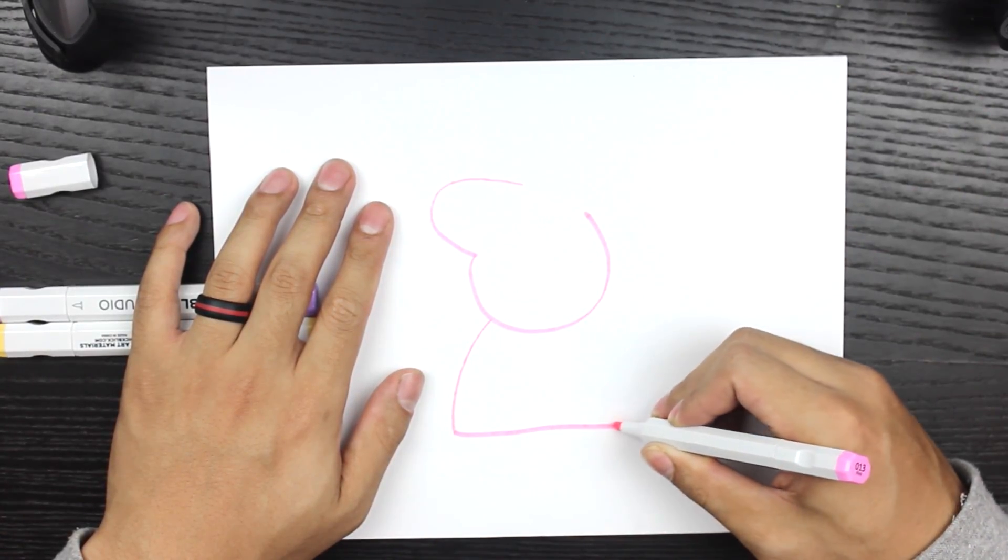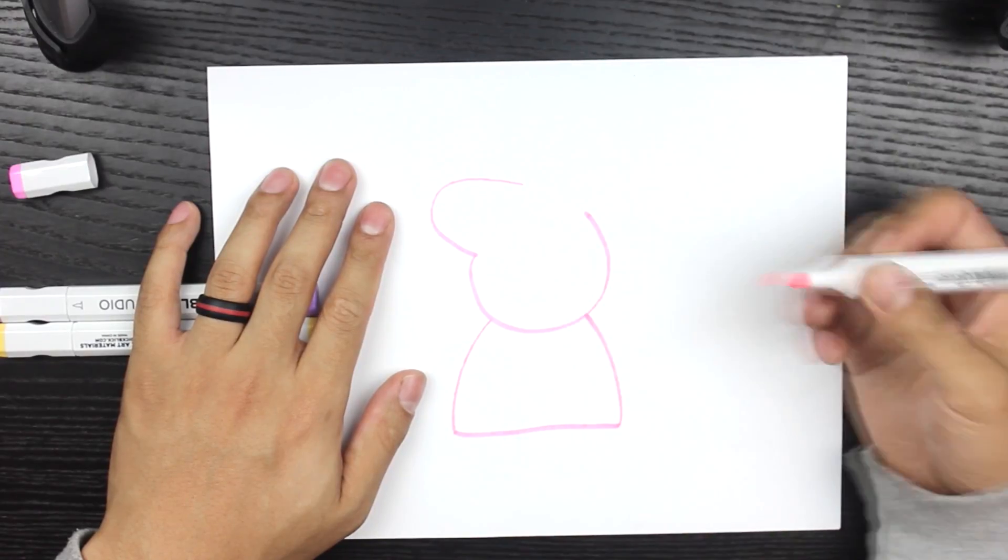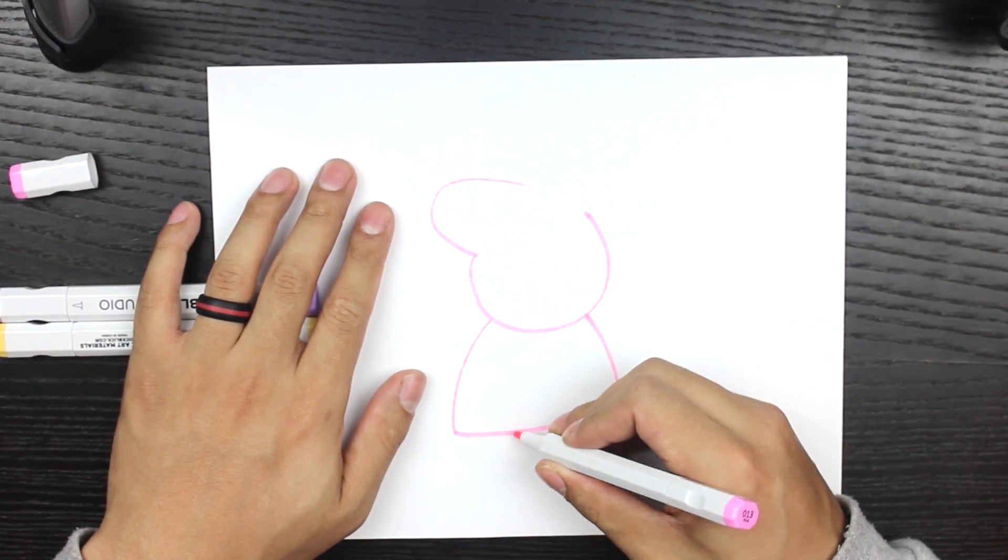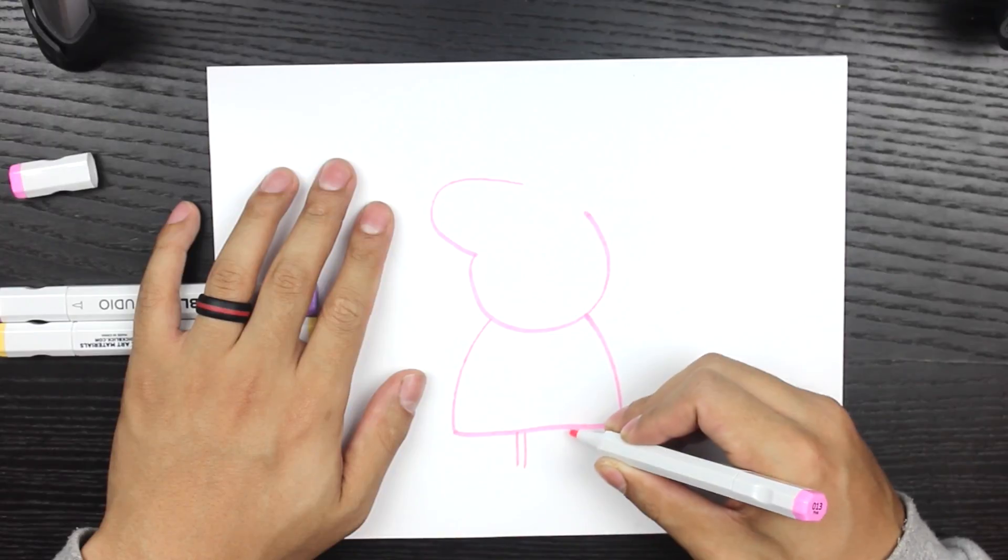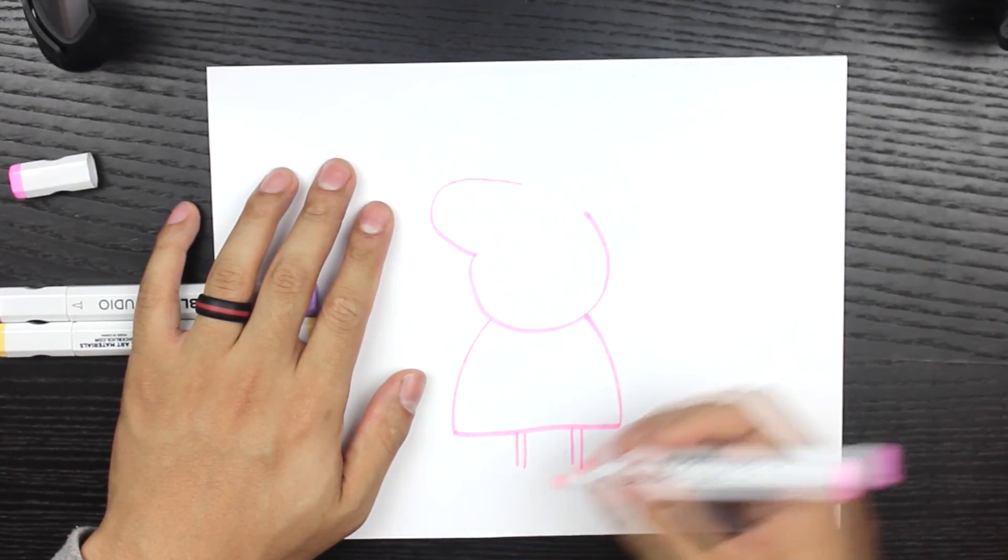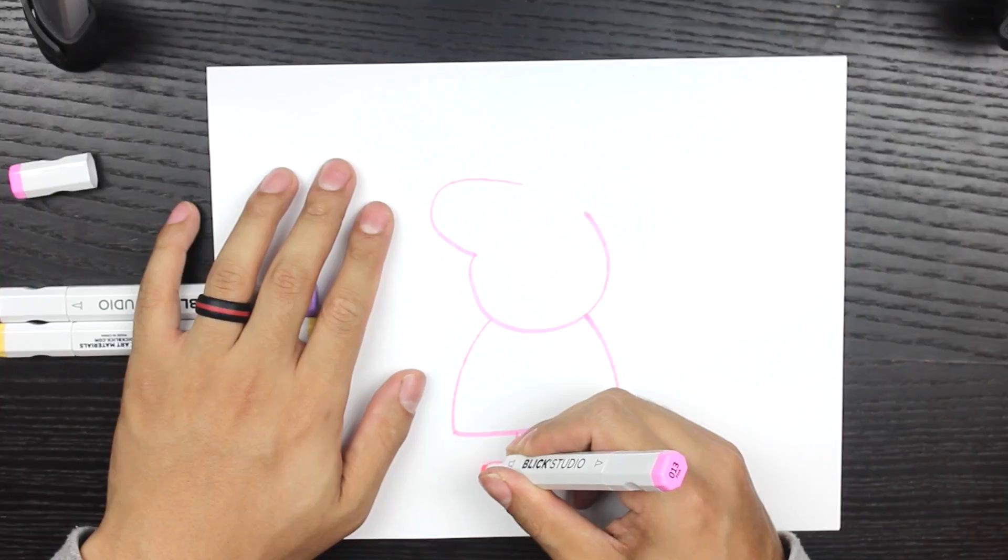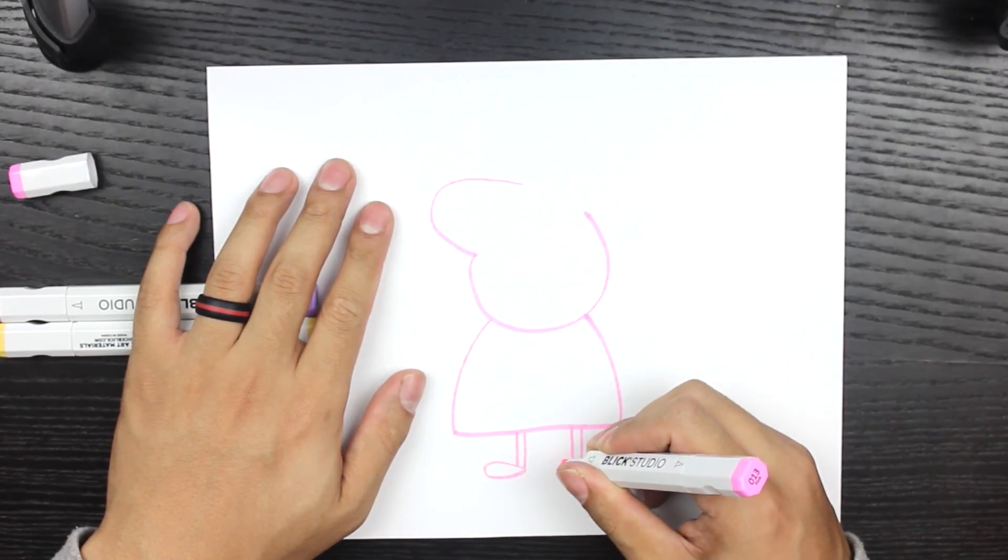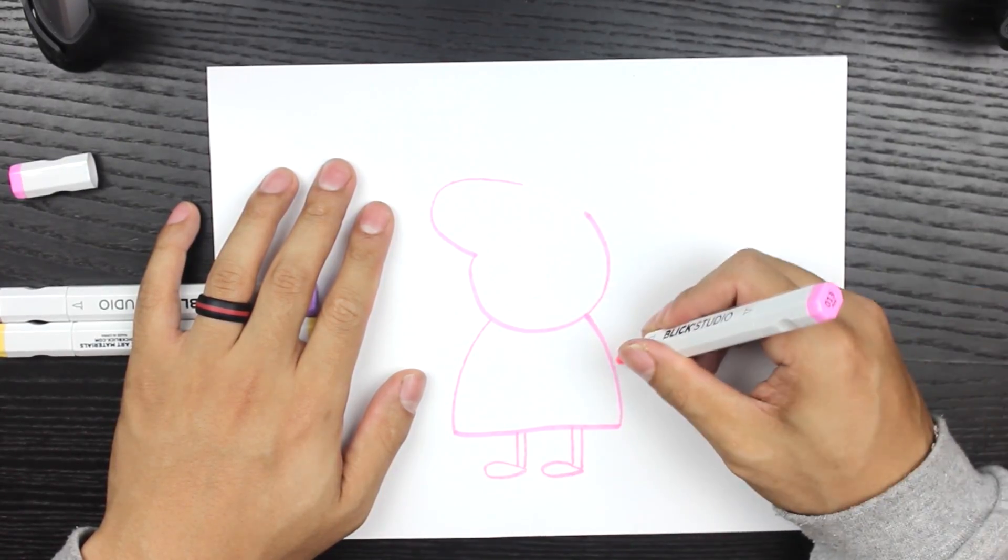So we're going to create the body. It's kind of like a half arc with a flat bottom, and then we're going to do two small legs right there. They're going to be the shape of teardrops sideways to make the feet.